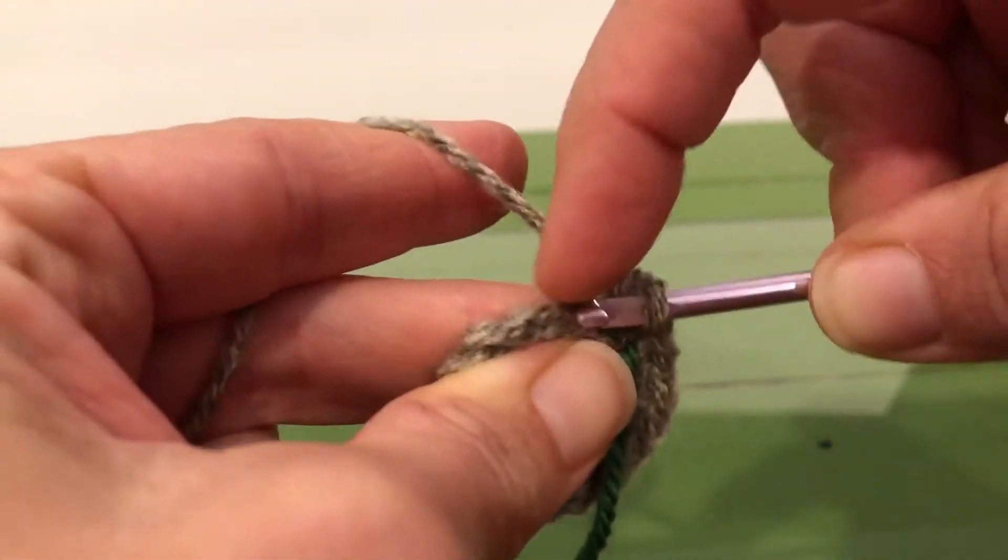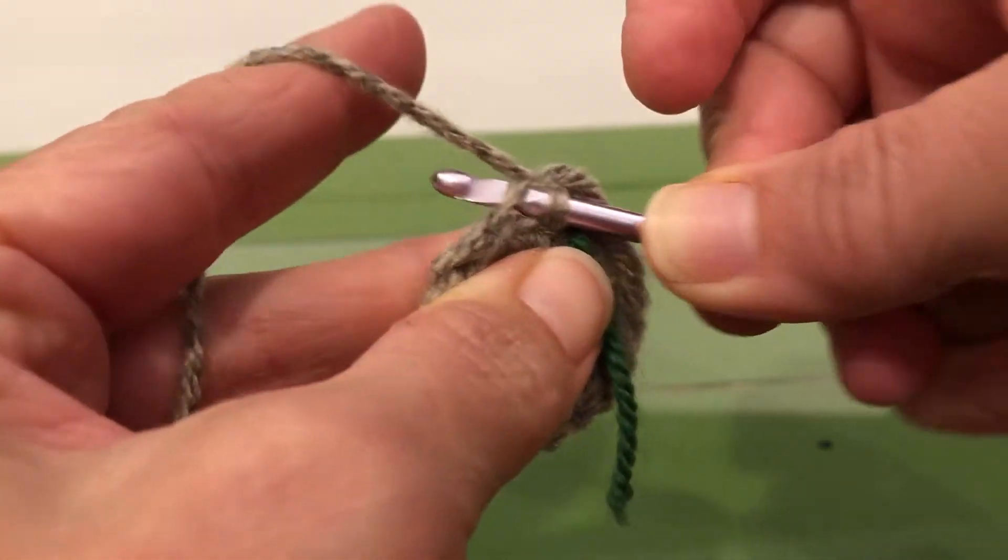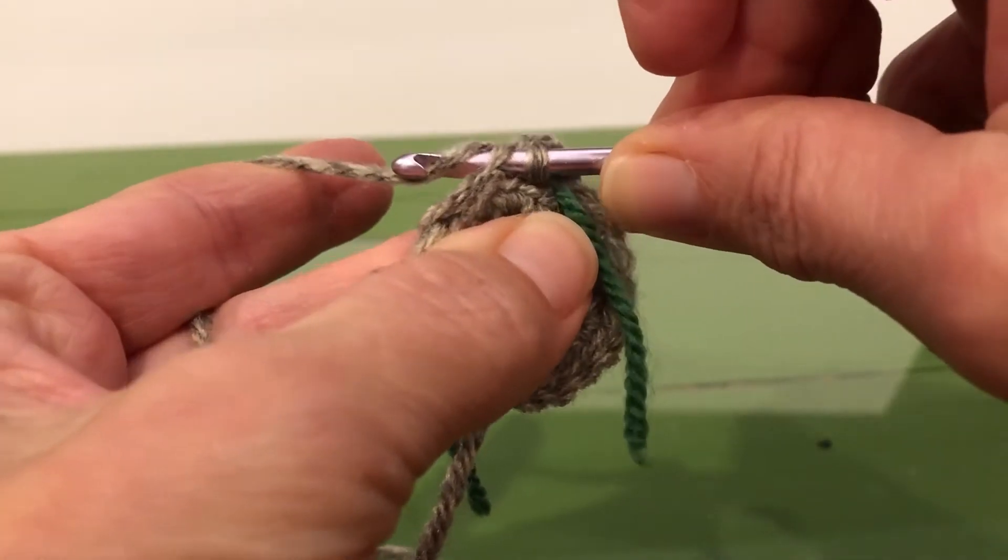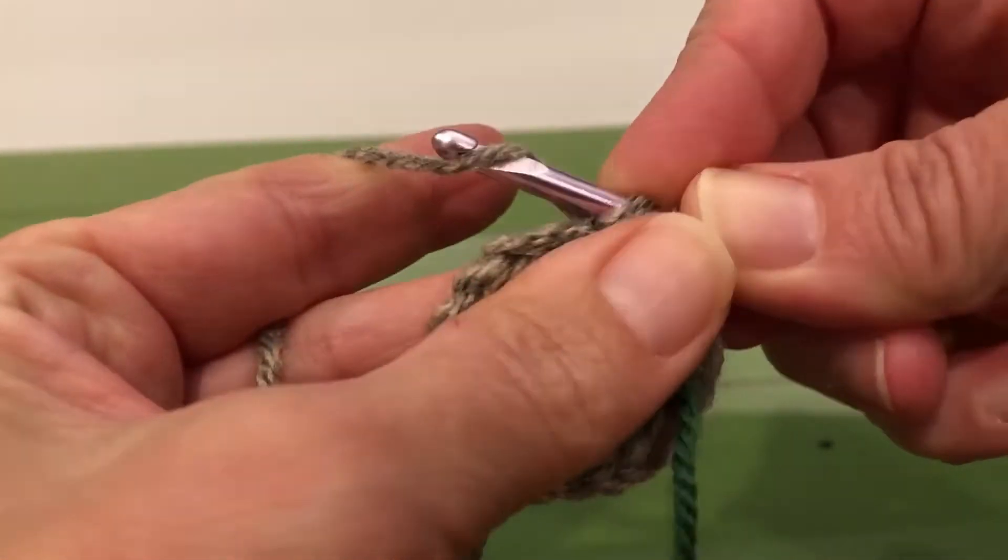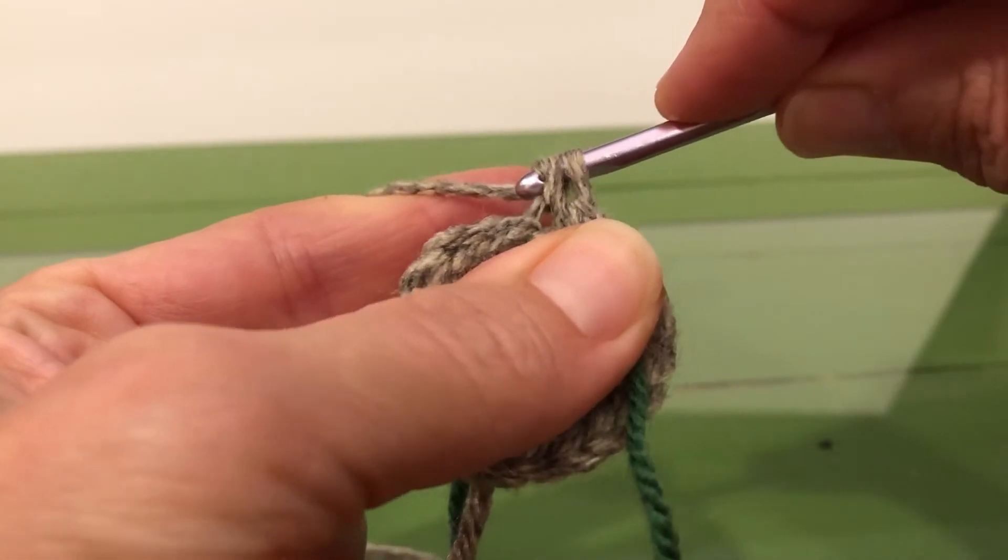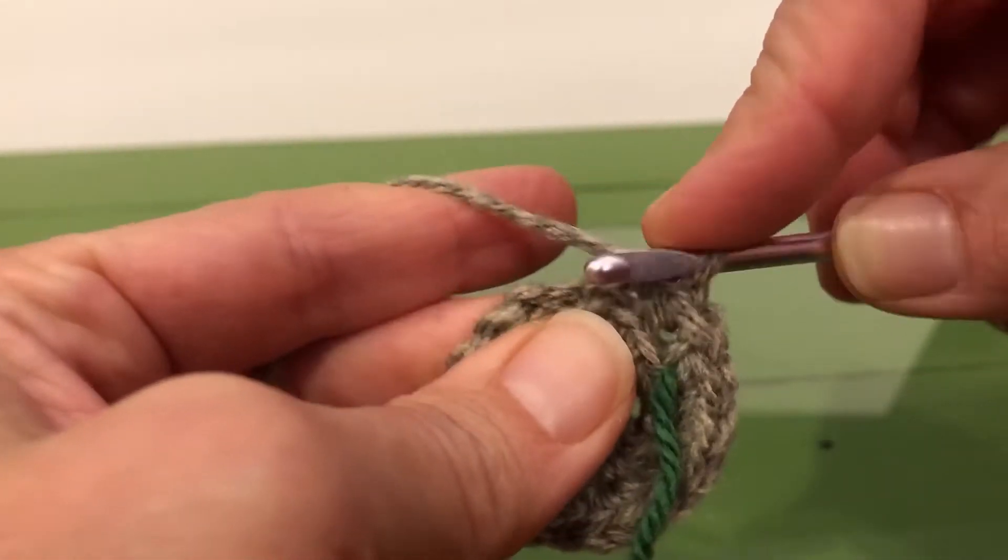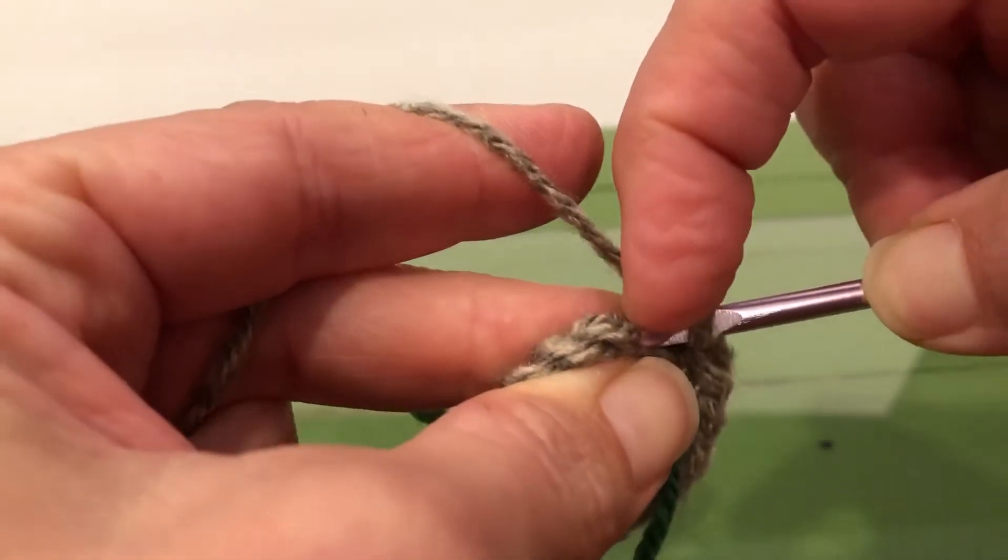Go in the back only, right there. Yarn over, pull through, yarn over, pull through both. Just like that. We're going to continue doing this all the way around.